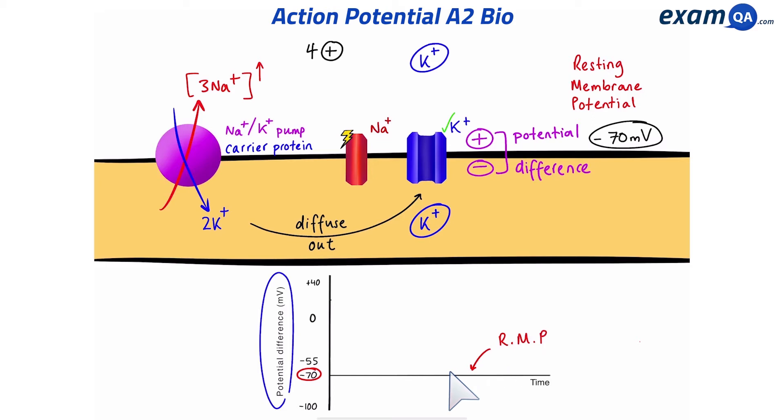Now, this graph, which represents potential difference, the numbers are always referring to what's inside the cell. So that means whatever charge you see on the y-axis of this graph is referring to inside the cell. So right now, it says minus 70, which means the inside is more negative compared to the outside.